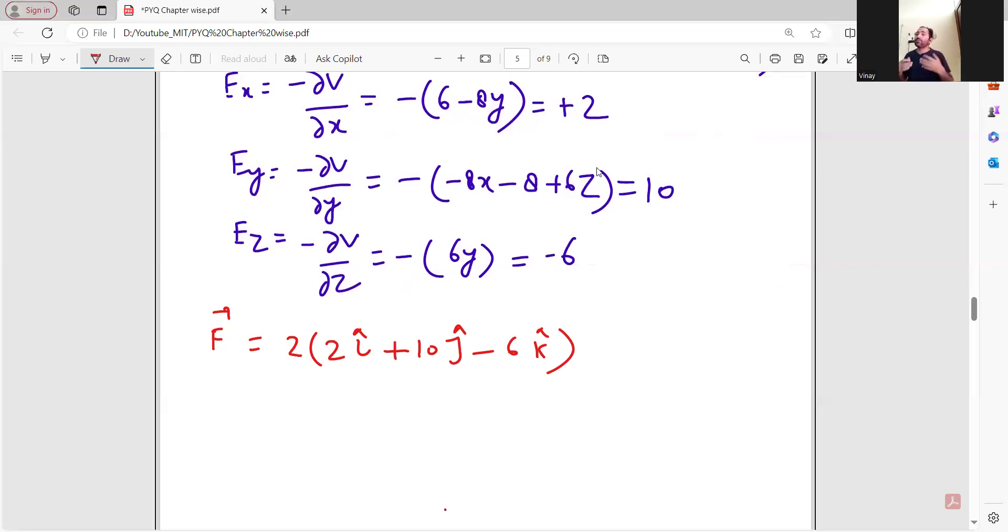Force will be q into E. The charge q is 2 coulombs. Force vector equals 2 into E, which gives 4 i cap plus 20 j cap minus 12 k cap.